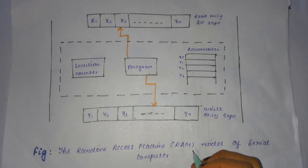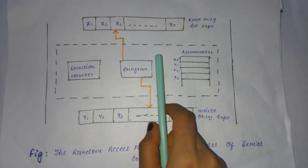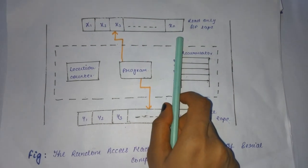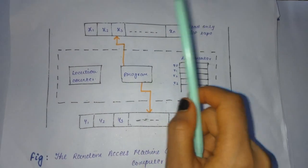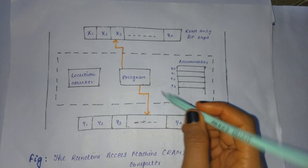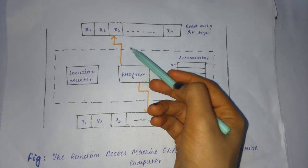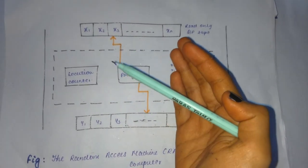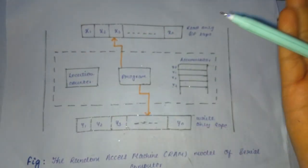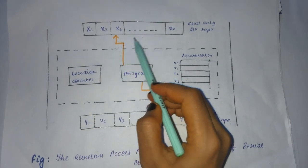The one address computer consists of an input tape which contains the sequence of integers. Every time the input is read by the input head, this is the input head. Every time the input head reads the input tape, the input head advances by one square, that is moves to the next square.